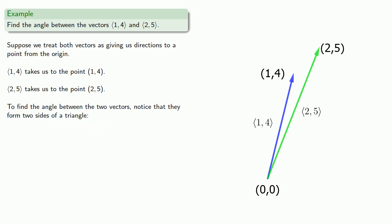That third side goes from (1,4) to (2,5), and this corresponds to the vector (1,1).